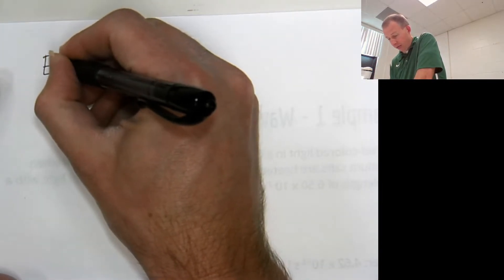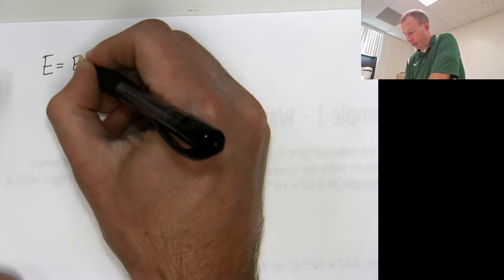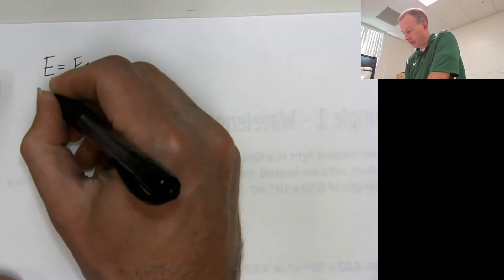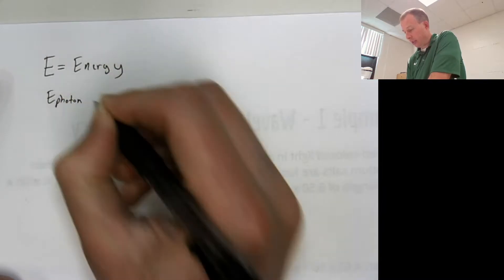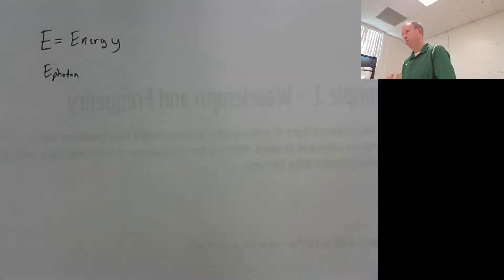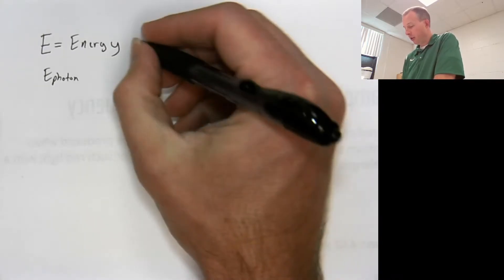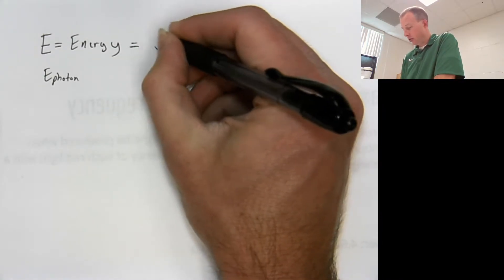It's going to be written with an E. That just represents energy. Usually written as energy of a photon, specifically E of a photon, which we talked about is the little particle of light. Remember our unit for energy is going to be joules.